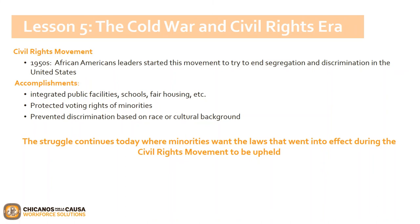By the mid-20th century, Black Americans fought for equality. The Civil Rights Movement was led by many prominent community members, including Martin Luther King Jr. Some of the victories during the Civil Rights Movement were integrated public facilities and schools, fair housing, protecting voting rights of minorities, and preventing discrimination based on race or cultural background. The struggle continues today where minorities want the laws enacted during the Civil Rights Movement to be upheld.